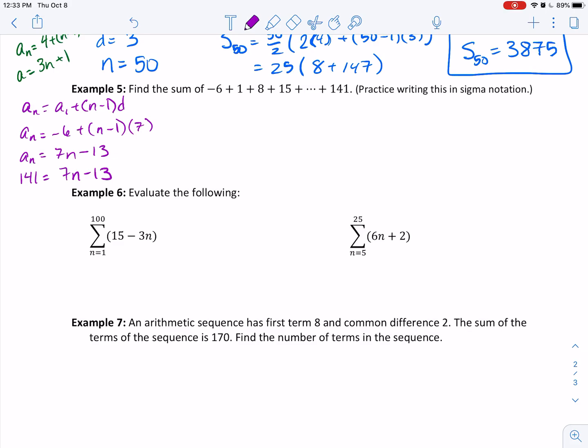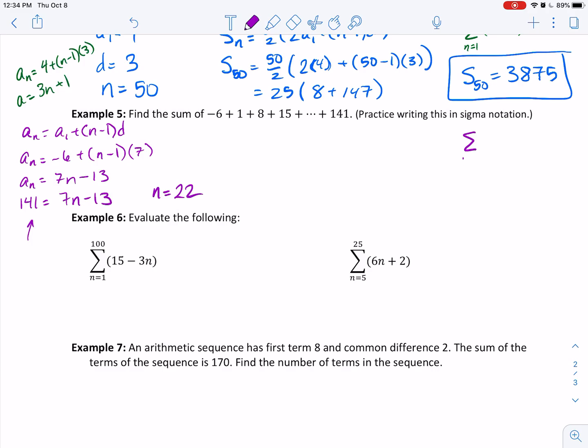Then I have 141 equals 7n - 13, I'm going to add 13 to both sides and divide by 7. I don't know if you can hear it, but I was using a calculator. So n is going to be equal to 22 when I solve this little equation. So that tells me, practice writing in sigma notation, I can say this is the sum as n goes from 1 to 22 of that rule, which was 7n - 13.